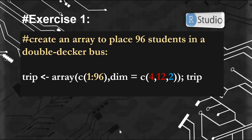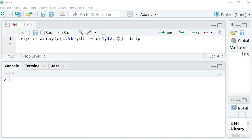In exercise 1, we are going to create an array to place 96 students in the Double Decker Bus. So we are going to assign our array to trip, and inside of our array, we will create a vector of 96 numbers. Then, we are going to specify our row numbers to 4, column numbers to 12, and our matrix number to 2.